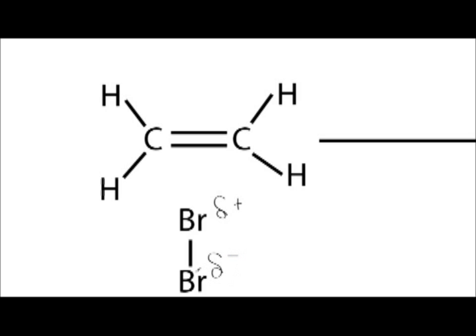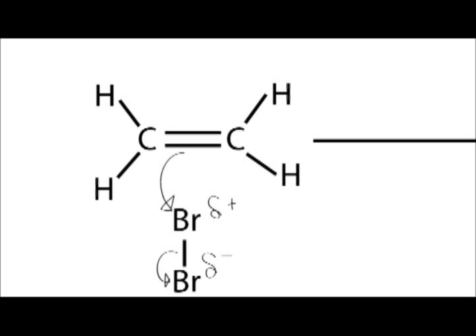You also have to add curly arrows to show the movement of electrons from the electron pairs from the double bond into the top bromine and movement of electron pairs from the bond into the lower bromine. Now because this bromine has a delta negative charge, the bond splits heterolytically and this bonds with the carbon, breaking the double bond.